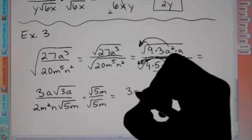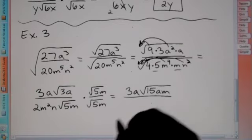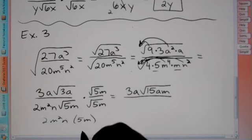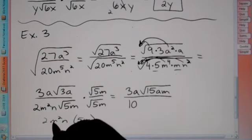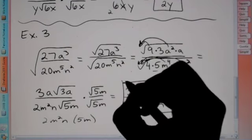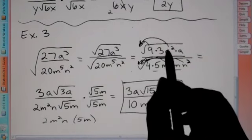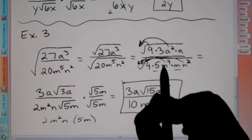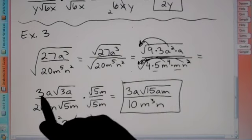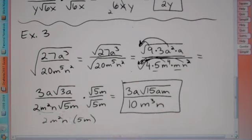The 3 and the 2 don't reduce, and these are different variables so there's nothing to reduce right now. The next step is to get rid of the root by multiplying top and bottom by root 5m. On top we have 3a times root 3a times root 5m — so 3 times 5 is 15, and we have am underneath the root. On bottom, 2m squared n times root 5m times root 5m gives 2 times 5 is 10, m squared times m is m cubed, and we have n. That's our final answer: 3a root 15am over 10m cubed n.